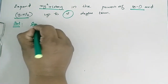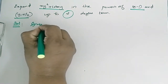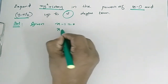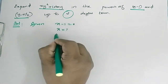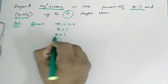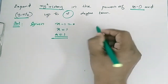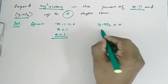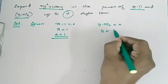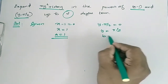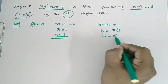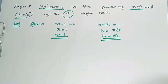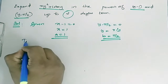Given: x minus 1 is equal to 0, so x is equal to 1, so a is equal to 1. y minus π/2 is equal to 0, so y is equal to π/2, therefore b is equal to π/2.